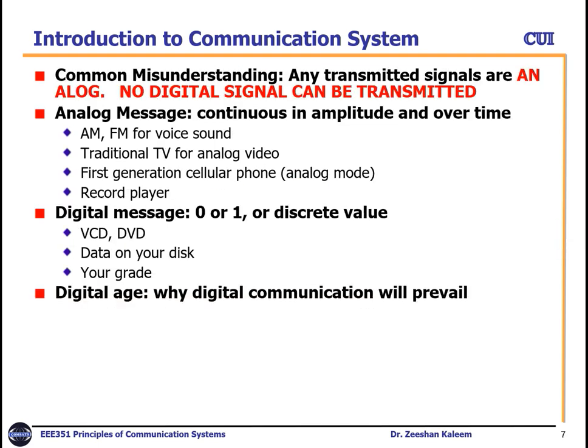There is a common misunderstanding that any transmitted signals are analog and that digital signals cannot be transmitted. You must remember that whenever we talk about digital systems, it doesn't mean we are transmitting a digital signal through the wireless medium. There will only be analog signals in the medium — the difference is in the processing. There will be digital signal processing on both the transmitter and receiver sides, whereas transmission through the medium will always be analog.